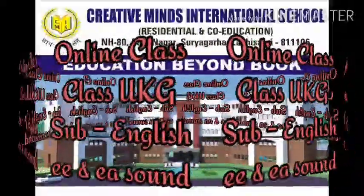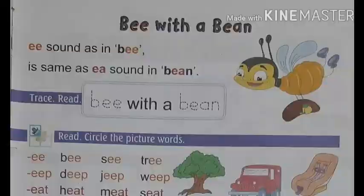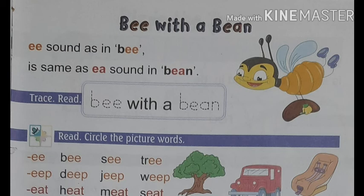We are going to learn about double E and E-A sound. Here you can see double E sound and E-A sound. I am going to explain using 'bee' and 'bean' — the double E sound as in 'bee' is the same as the E-A sound as in 'bean'. So 'bee' has double E sound and 'bean' has E-A sound.